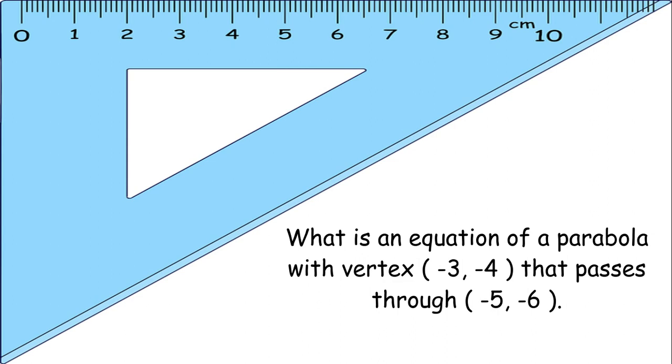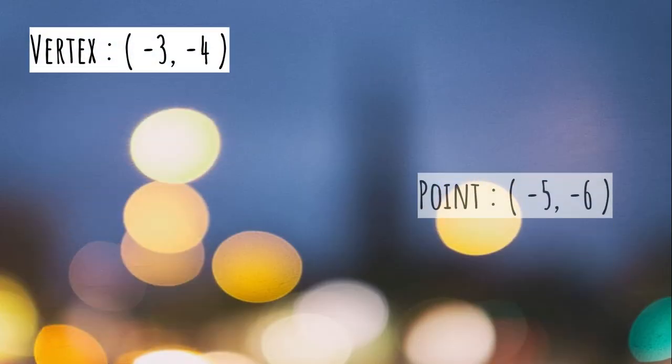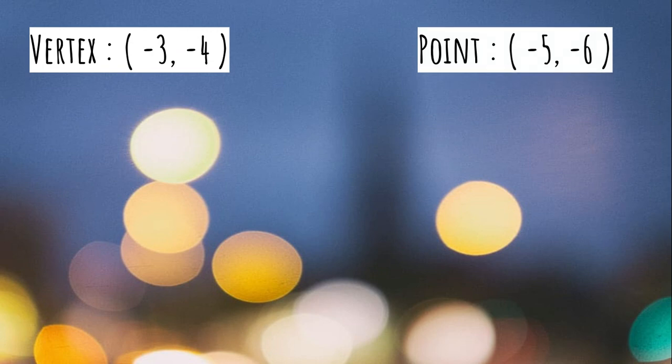What is an equation of a parabola with vertex (-3, -4) that passes through (-5, -6)? Vertex: (-3, -4). Point: (-5, -6).